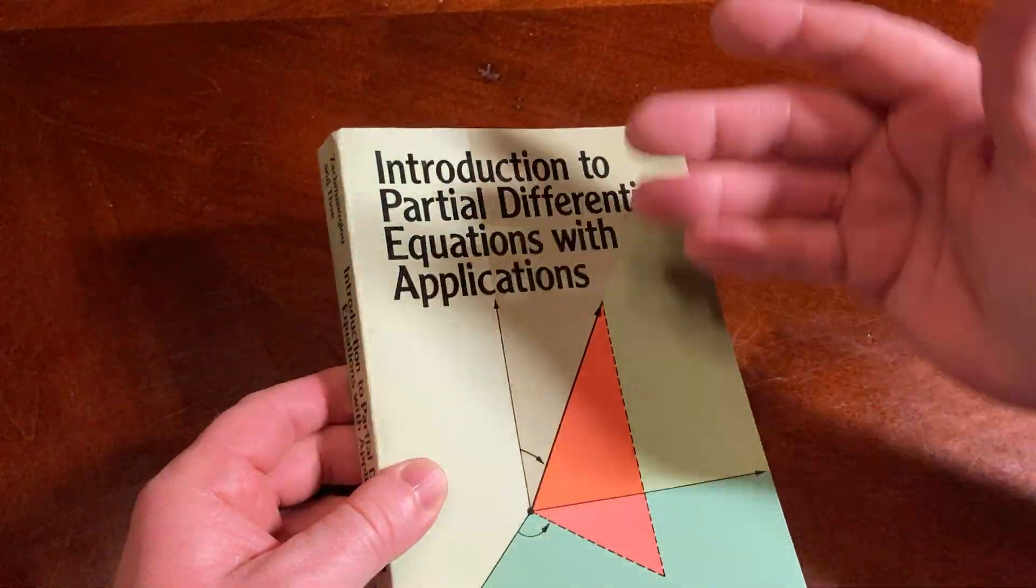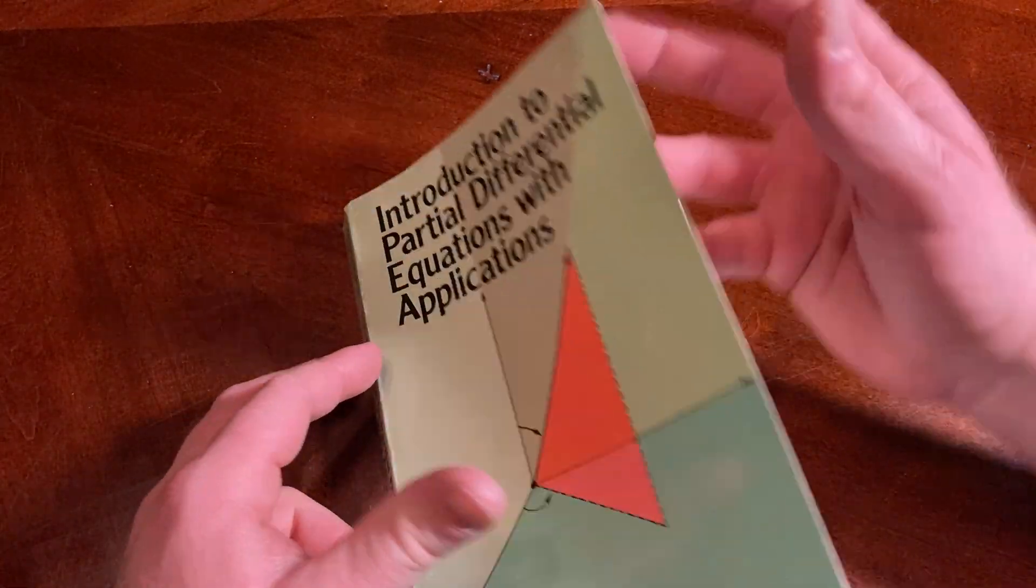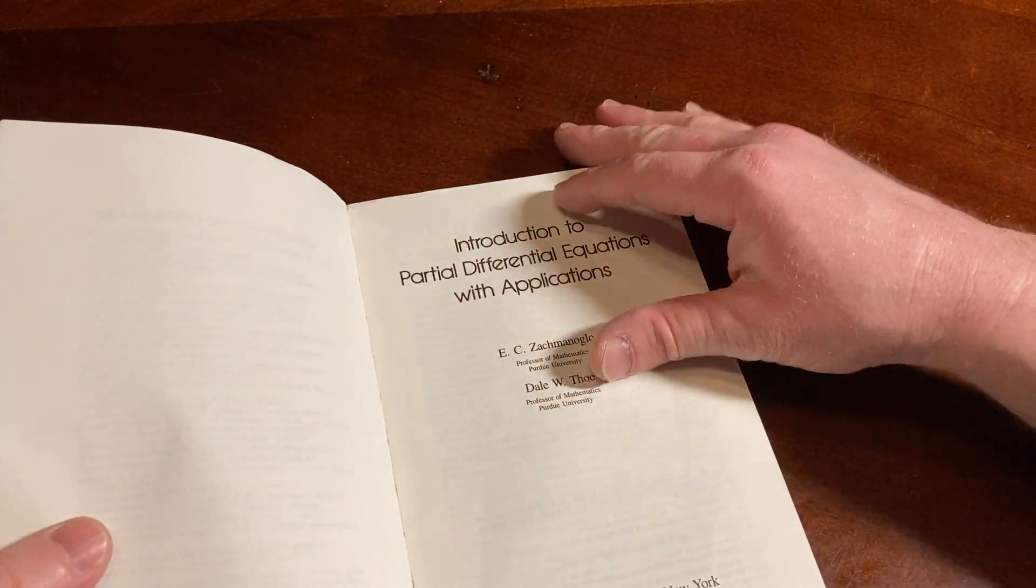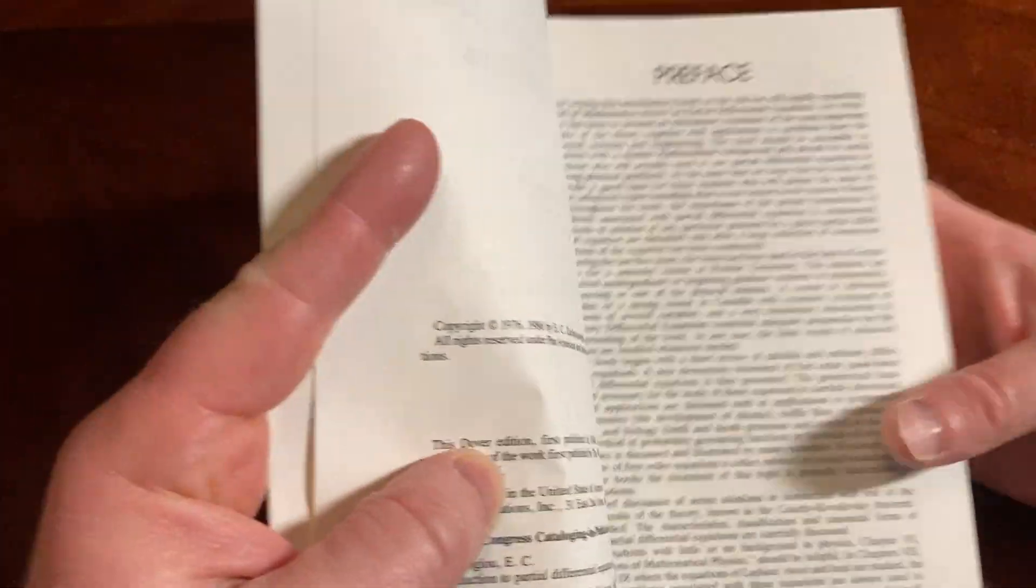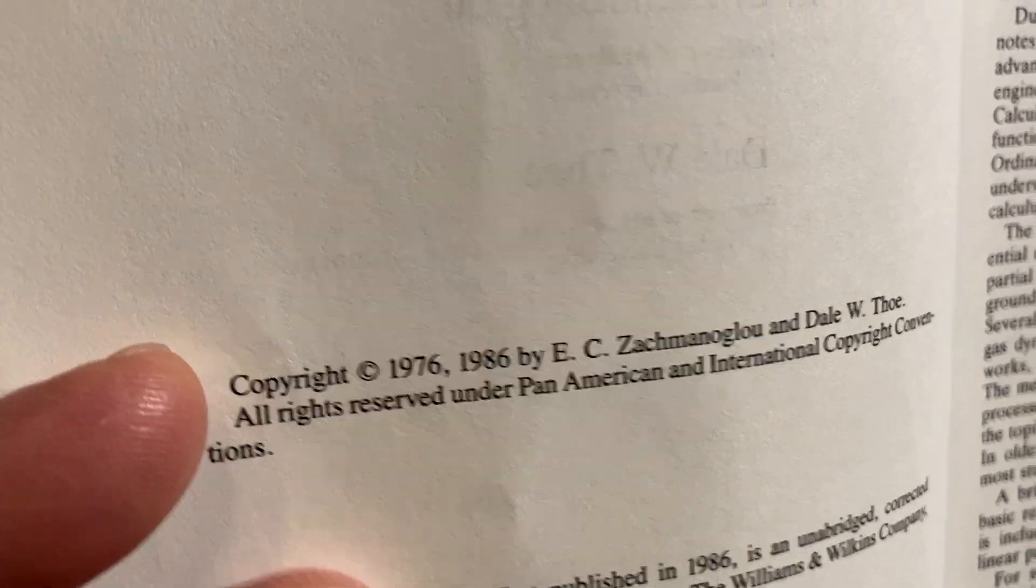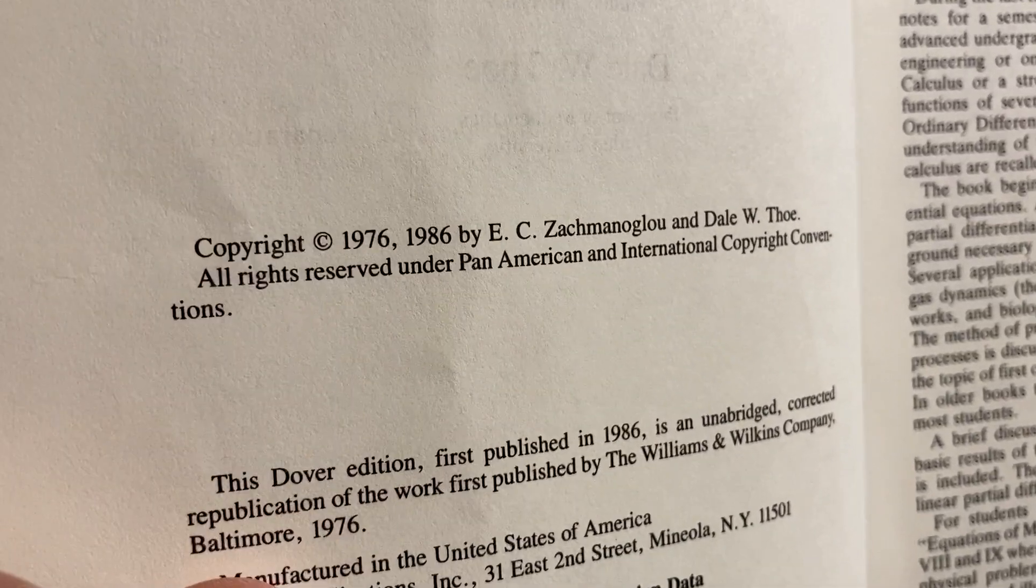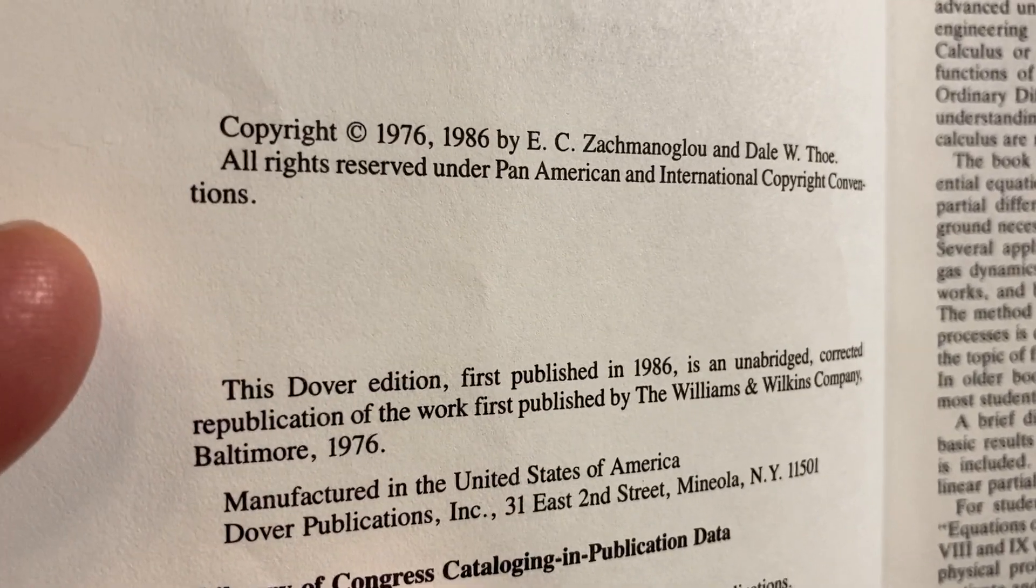Let's take a look inside and see when the original was printed. A lot of times you just can't find the originals or they're expensive with few copies, so Dover reprints them. Copyright 1976 and 86. So it was reprinted again in 86. The Dover edition is from 86.